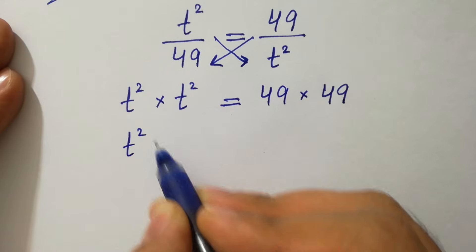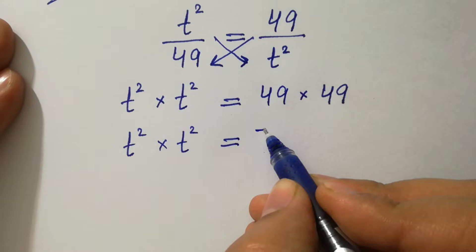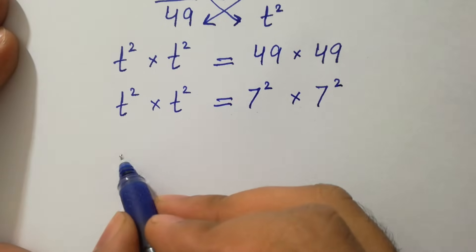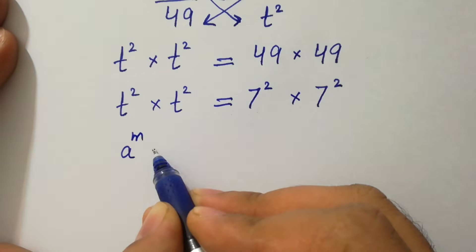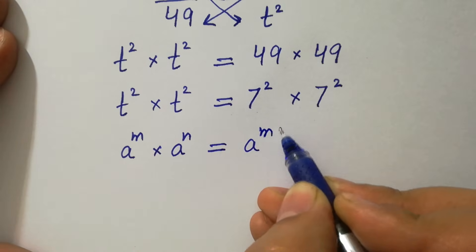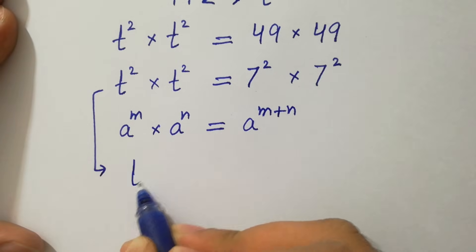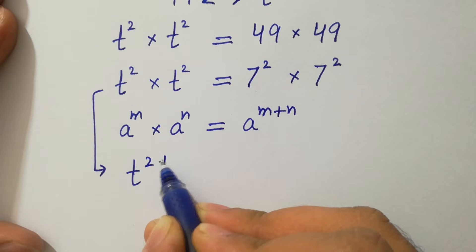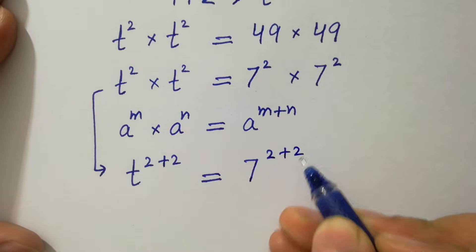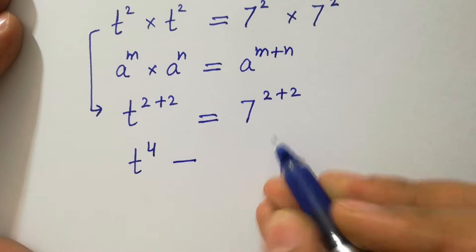t² times t² equals 49, which is the same as 7² times 7². Since a to the power m times a to the power n equals a to the power m plus n, it will be t to the power 2 plus 2 equals 7 to the power 2 plus 2.